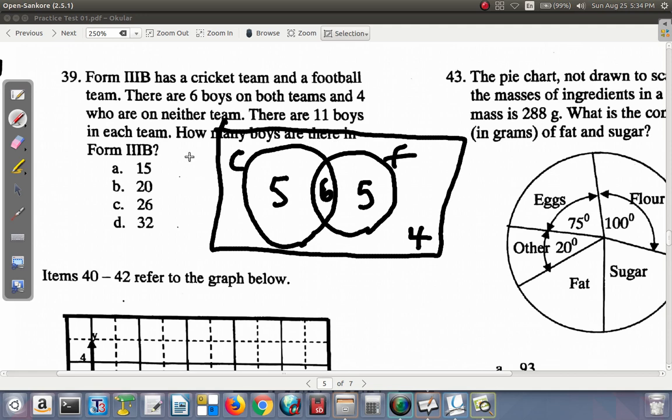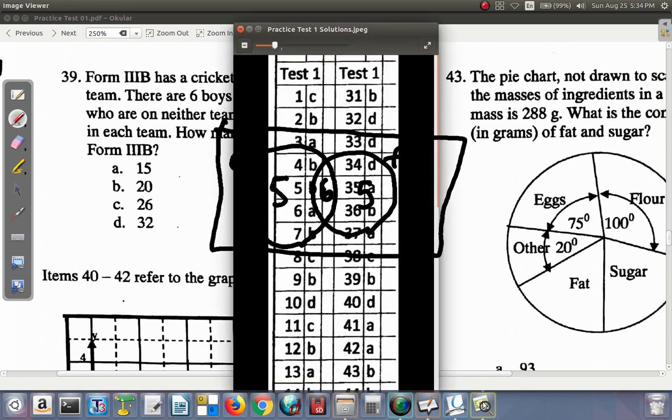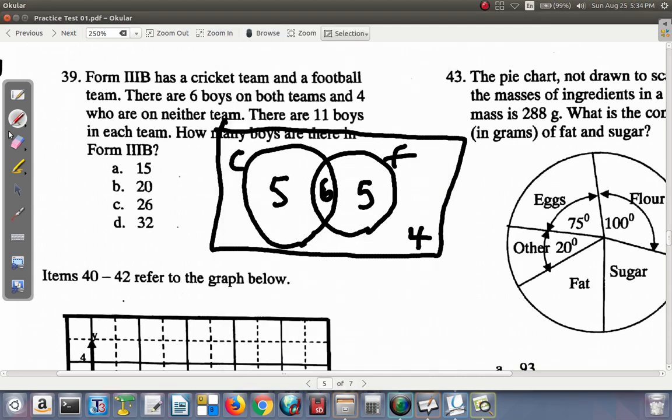How many boys are there in form 3B? Right. Let's see. Five plus five, ten, plus six, sixteen, plus four, twenty. So it's suggesting that the answer for question 39 is B. So question 39, B. Question 39 answer is B.